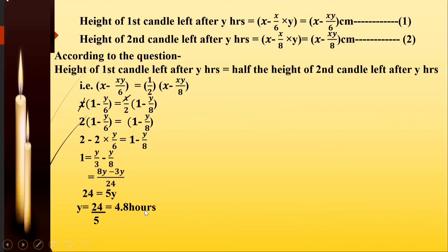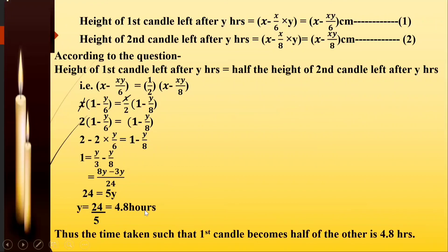So the final answer is that the time taken for the first candle to become half the height of the other is 4.8 hours. I hope it is clear to you. Thank you so much.